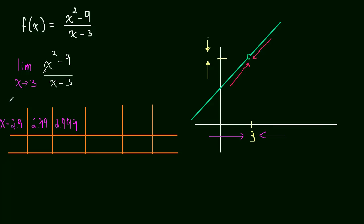And then so that means that x is getting closer to 3 from the left, squeezing in on 3. And then let's pick from the right side, 3.1, 3.01, and 3.001.